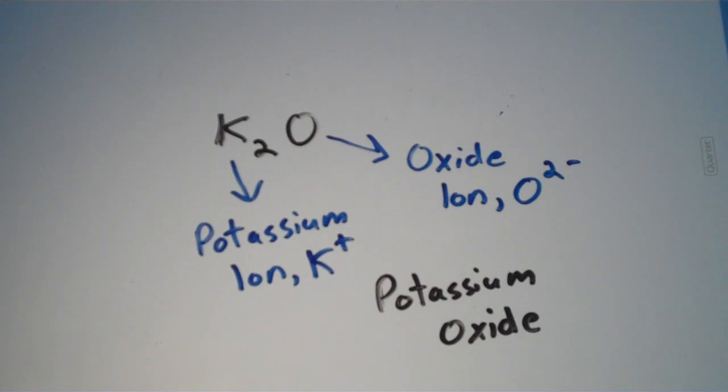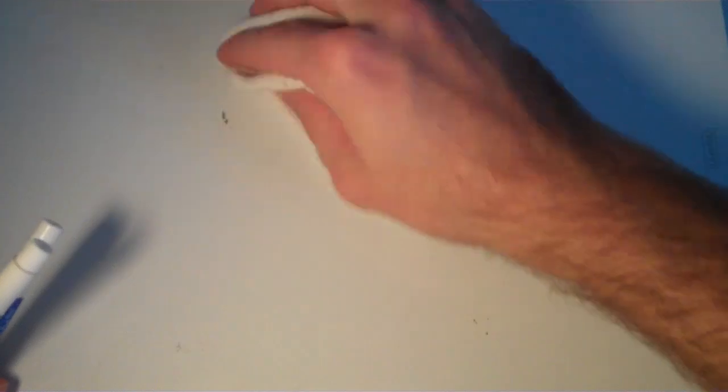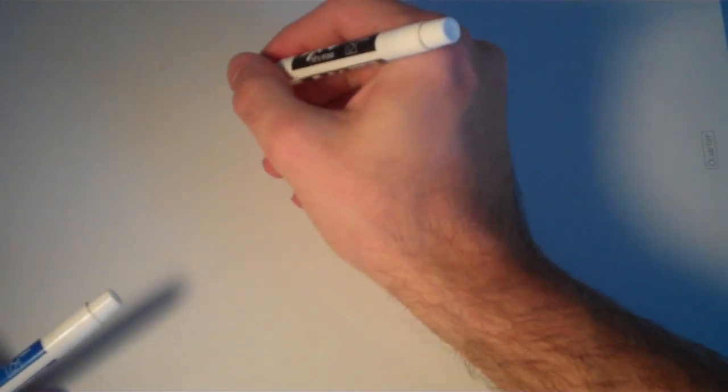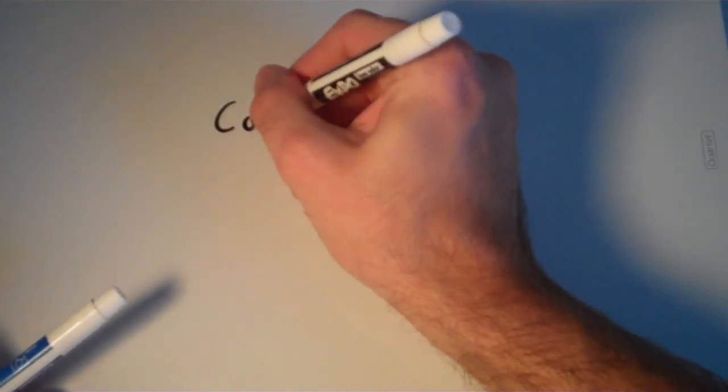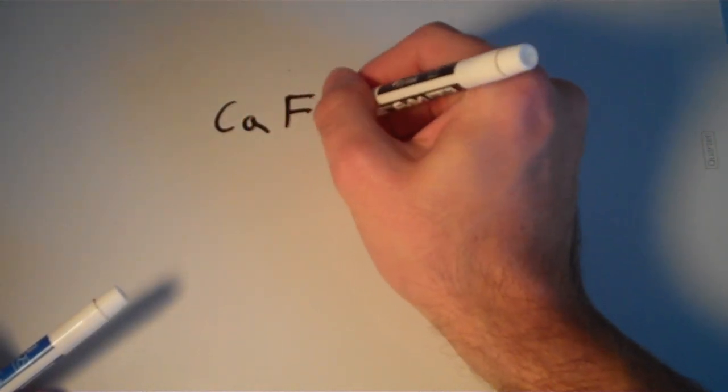Just like when we did the sodium ion, the potassium ion doesn't need a Roman numeral because it's also a group 1A metal. So let's do another one. How about this one?